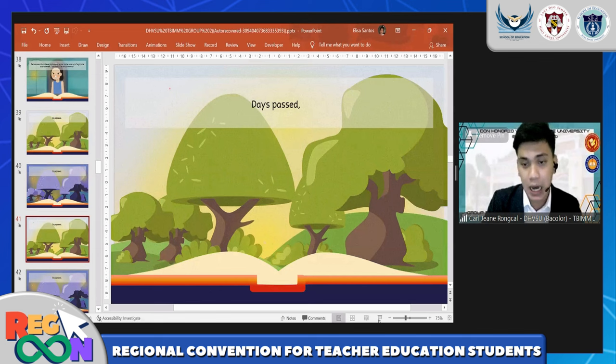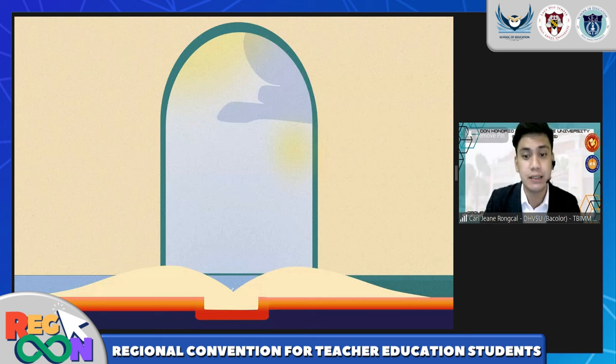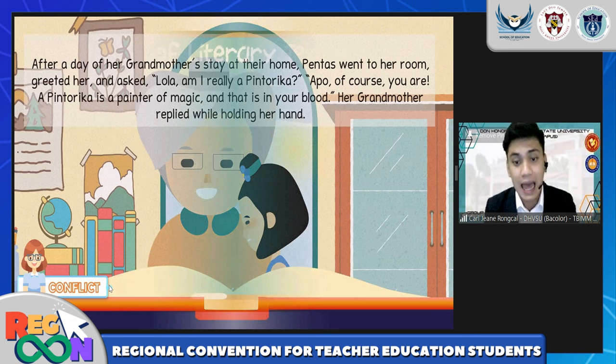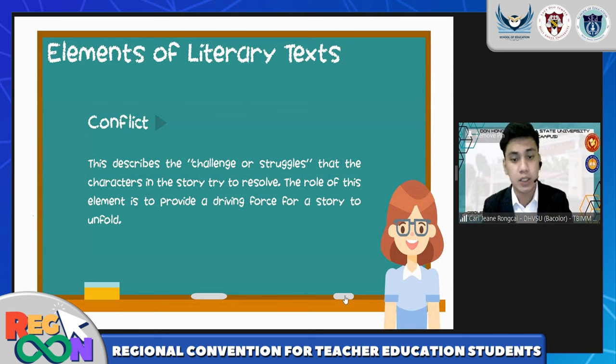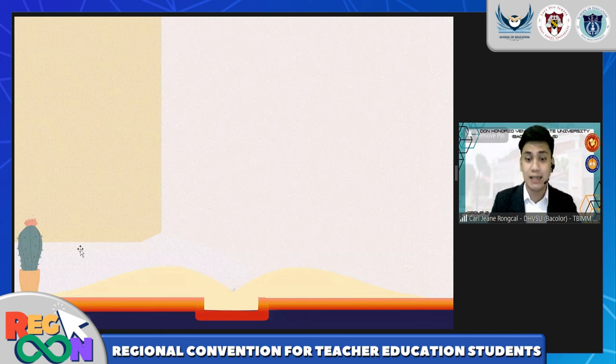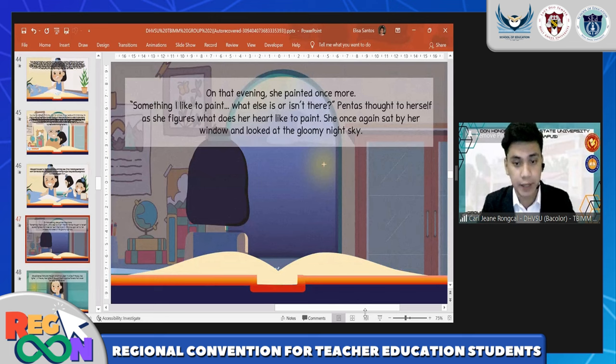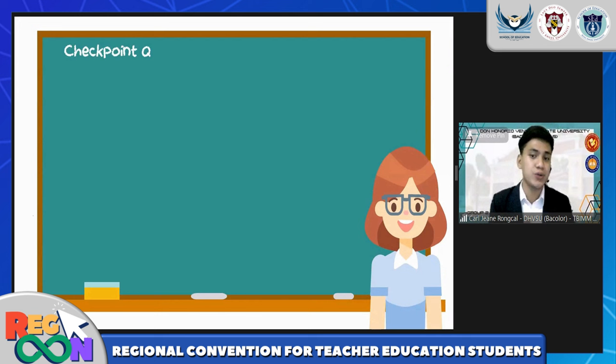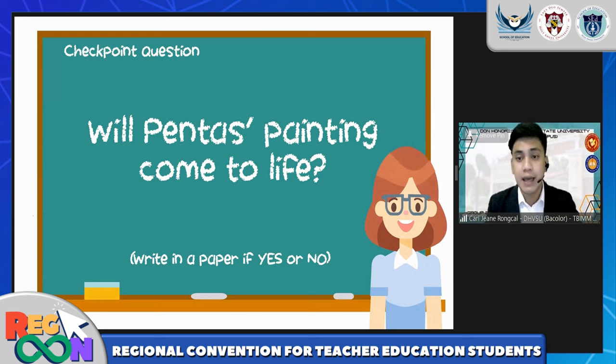When a particular literary element is encountered within the story — such as the conflict — a hyperlinked button appears. When clicked, it leads to a slide with a voiceover definition of that element. The elements are distributed throughout the story as the class encounters them during reading. Towards the climax, you may ask a closed-ended question about what will happen to the main character, and students write their answers on paper and raise them in front of the camera — another activity catering to the VARK model.